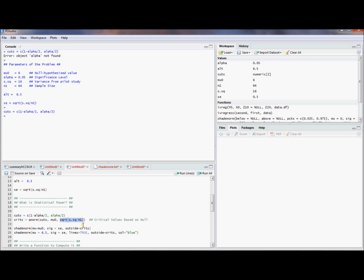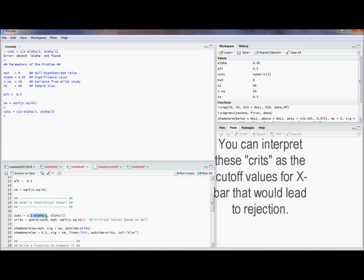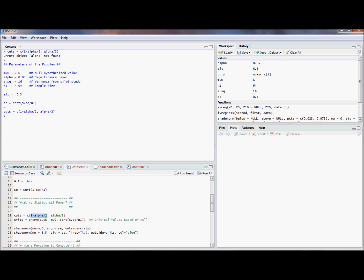So this is going to give us critical values based off of the sampling distribution of X bar. And we're going to basically ask for the quantile 1 minus alpha over 2. That's going to be 97.5 percentile. And the quantile from alpha over 2. So 0.025 or the 2.5 percentile. So we'll get some critical values.